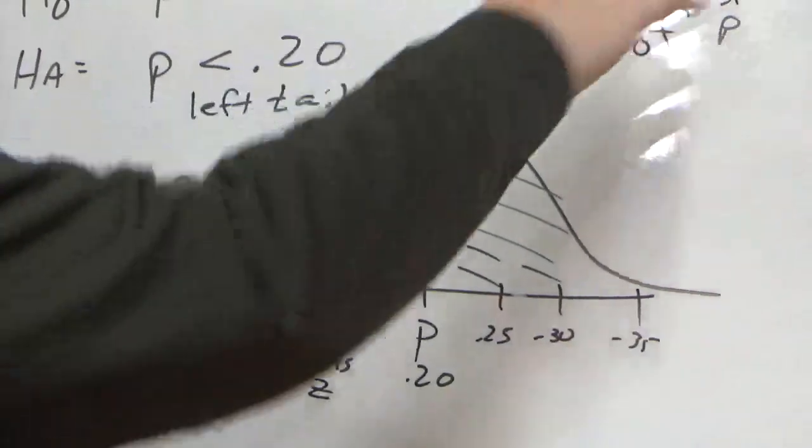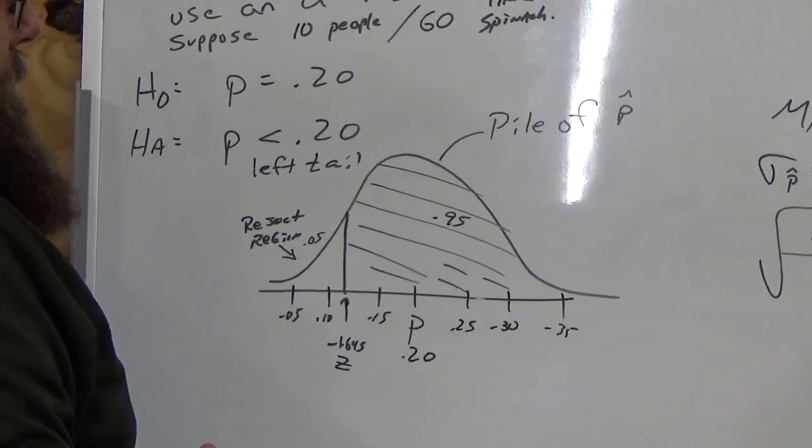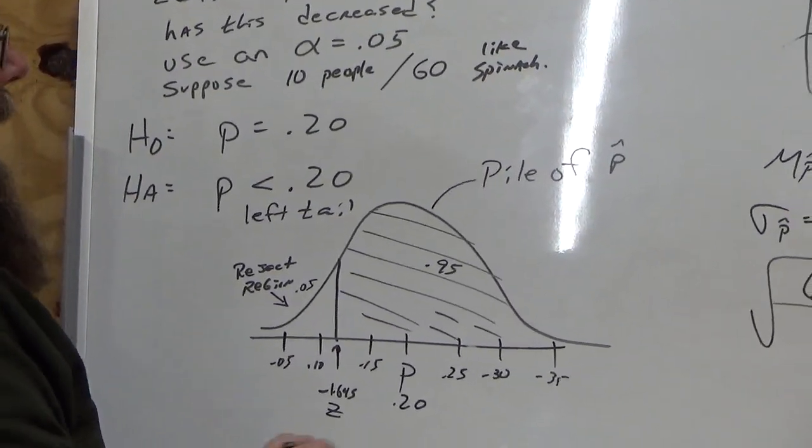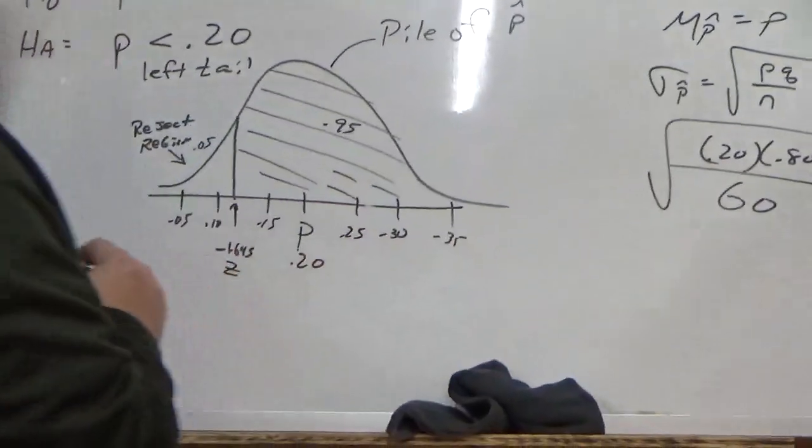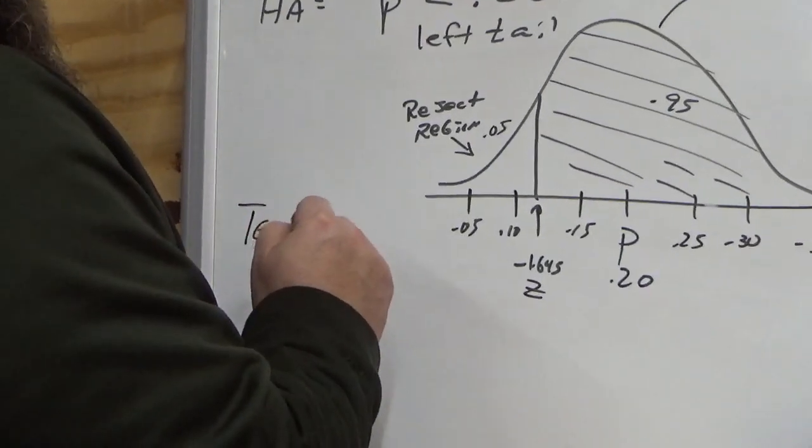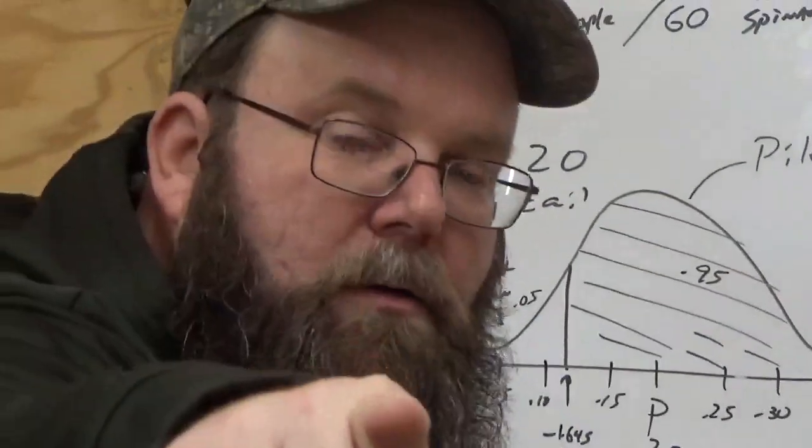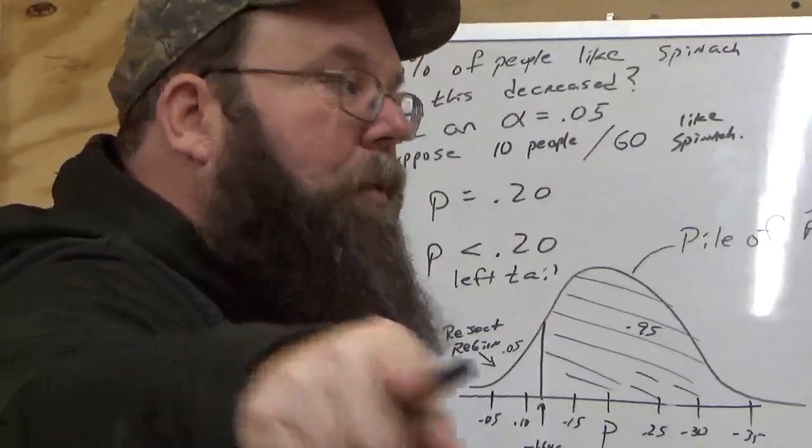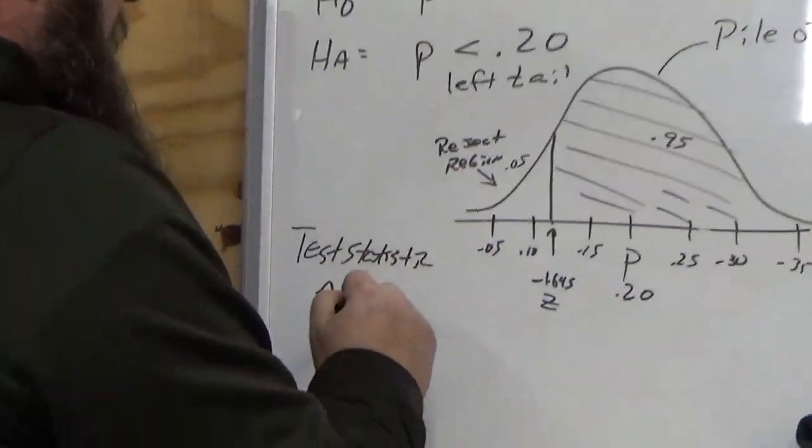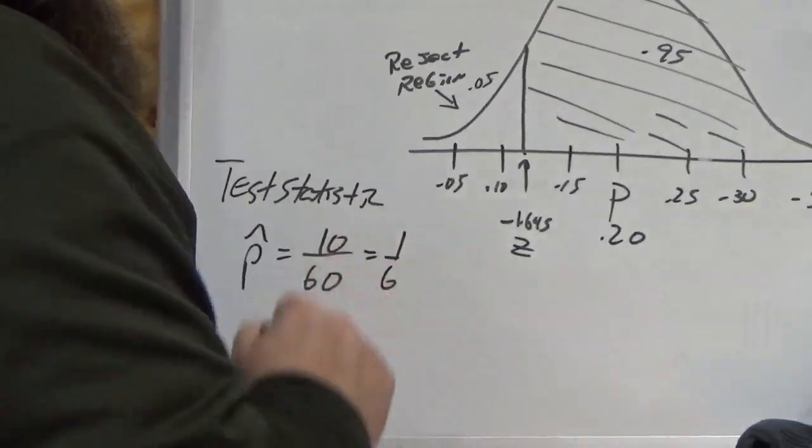We're going to calculate. Now, we're up to step 3. Calculate the test statistic. What's the test statistic? Well, that's P-hat. Test statistic comes from where? Comes from the sample. What's our sample? 10 people out of 60. P-hat, 10 people out of 60.